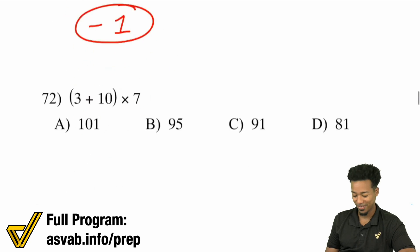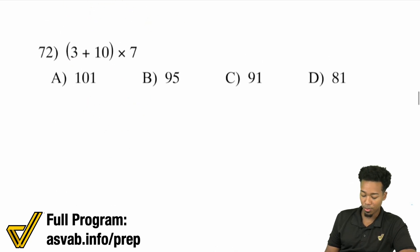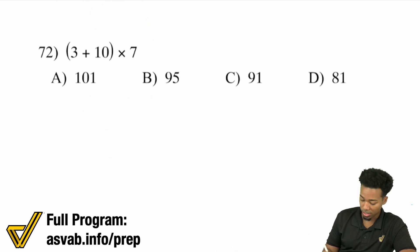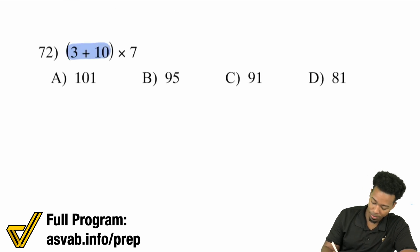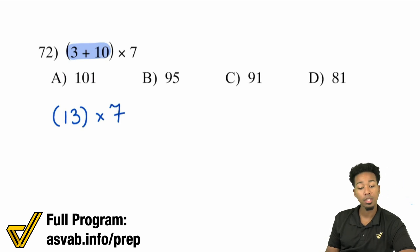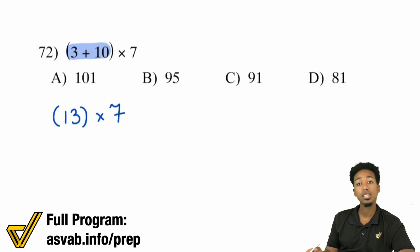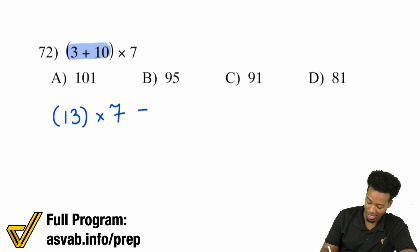Number 72: we have (3 plus 10) all times 7. We're going to take care of the parentheses first — 3 plus 10 is going to be 13. 13 times 7: using some mental math, 7 times 10 is 70, 7 times 3 is 21, and 70 plus 21 is 91. And you're done. Using that mental math is really, really good for us.